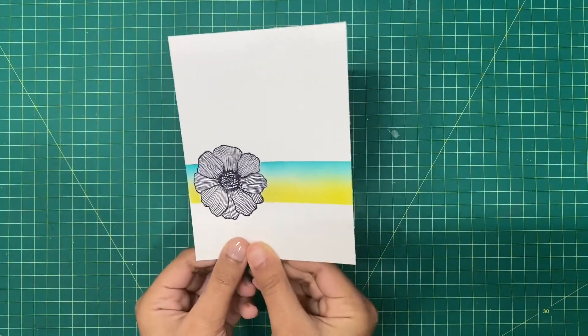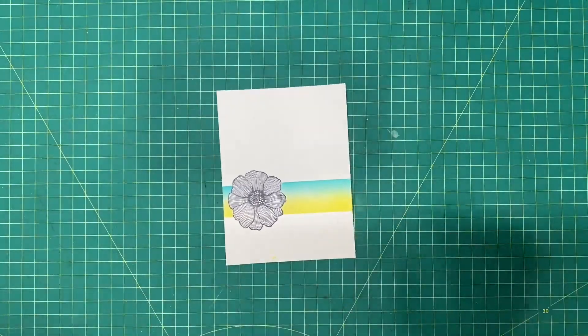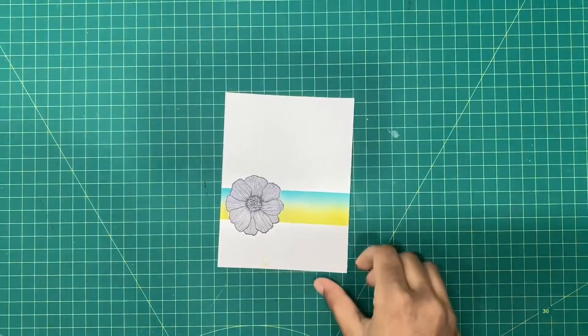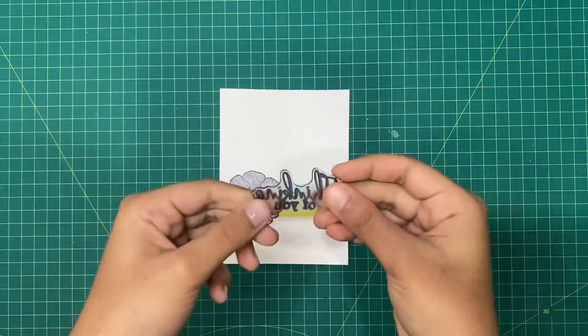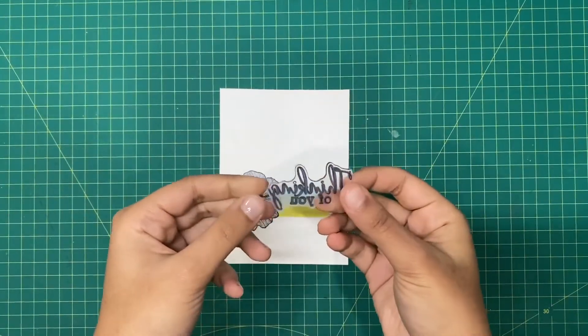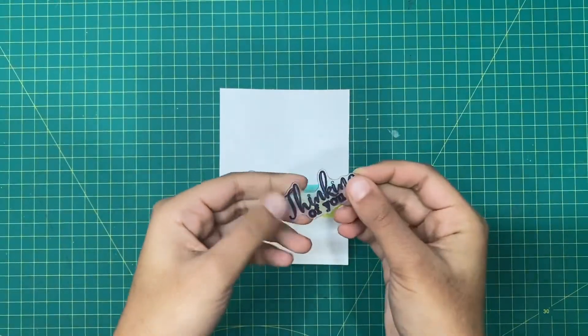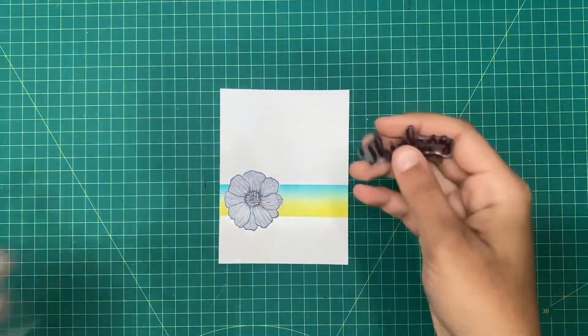It's very simple but very pretty. To finish off the mat, it's time to add the sentiment. Here I have a stamp that says thinking of you. I'm going to stick this onto my stamp block.